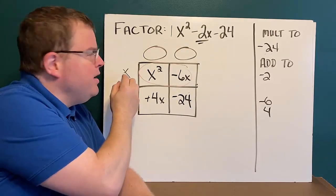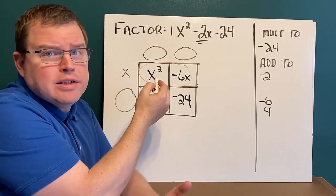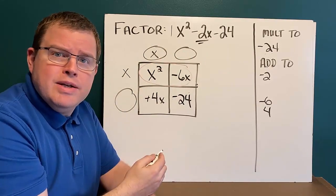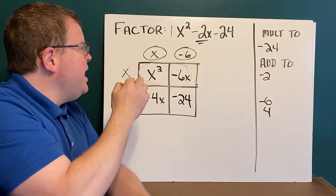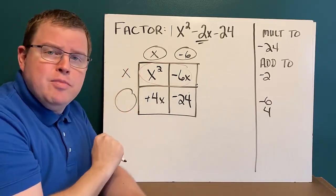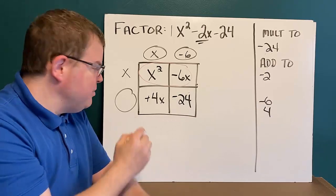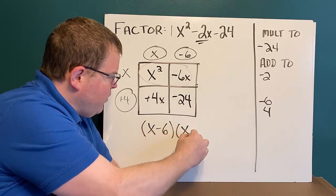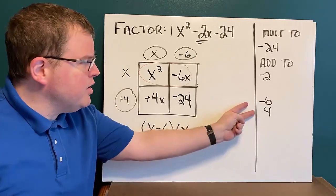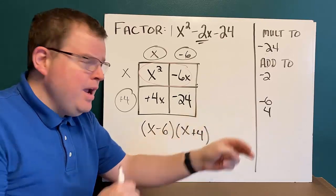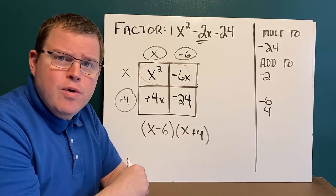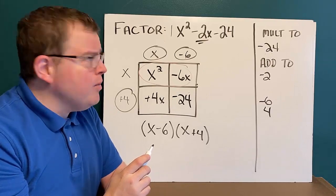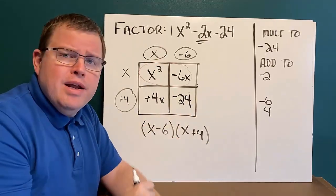Using multiplication to fill in the rest: x times x is x squared; x times negative 6 is negative 6x; x times 4 is 4x. So my factors are x minus 6 and x plus 4. You might notice we chose negative 6 and positive 4, and in our factors we have a minus 6 and a plus 4 — that's no coincidence. Whenever you have a 1x squared, the two numbers you found will be the numbers in the parentheses.